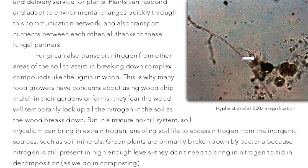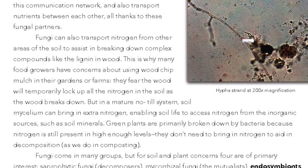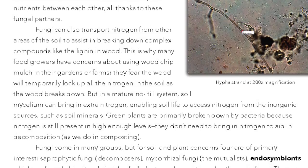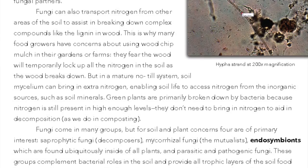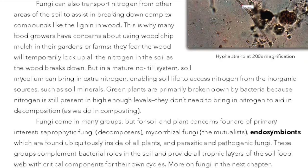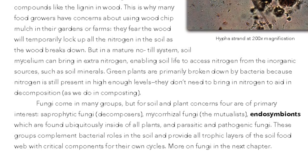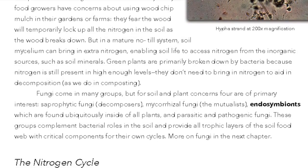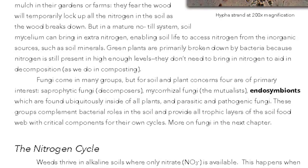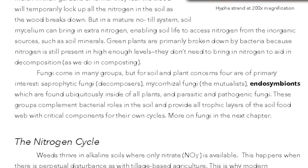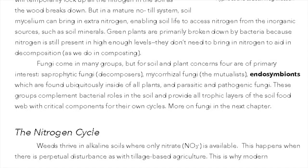This is why many food growers have concerns about using wood chip mulch in their gardens or farms — they fear the wood will temporarily lock up all the nitrogen in the soil as the wood breaks down. But in a mature no-till system, soil mycelium can bring in extra nitrogen, enabling soil life to access nitrogen from inorganic sources such as soil minerals. Green plants are primarily broken down by bacteria because nitrogen is still present in high enough levels, so they don't need to bring in nitrogen to aid in decomposition. Fungi come in many groups, but for soil and plant concerns, four are of primary interest: saprophytic fungi (decomposers), mycorrhizal fungi (the mutualists), endosymbiotes, which are found ubiquitously inside all plants, and parasitic and pathogenic fungi. These groups complement bacterial roles in the soil and provide all trophic layers of the soil food web with critical components for their own cycles. More on fungi in the next chapter.